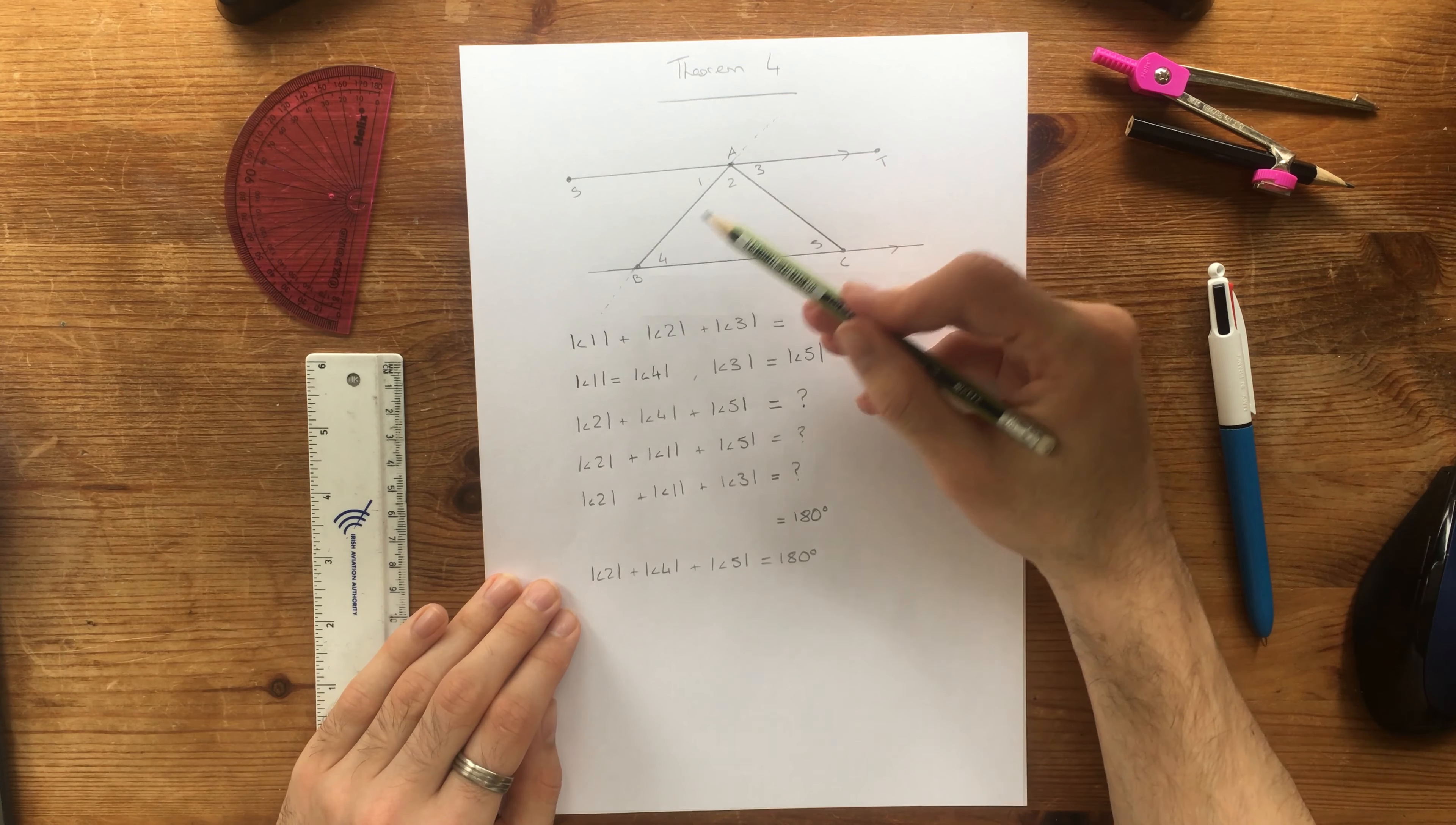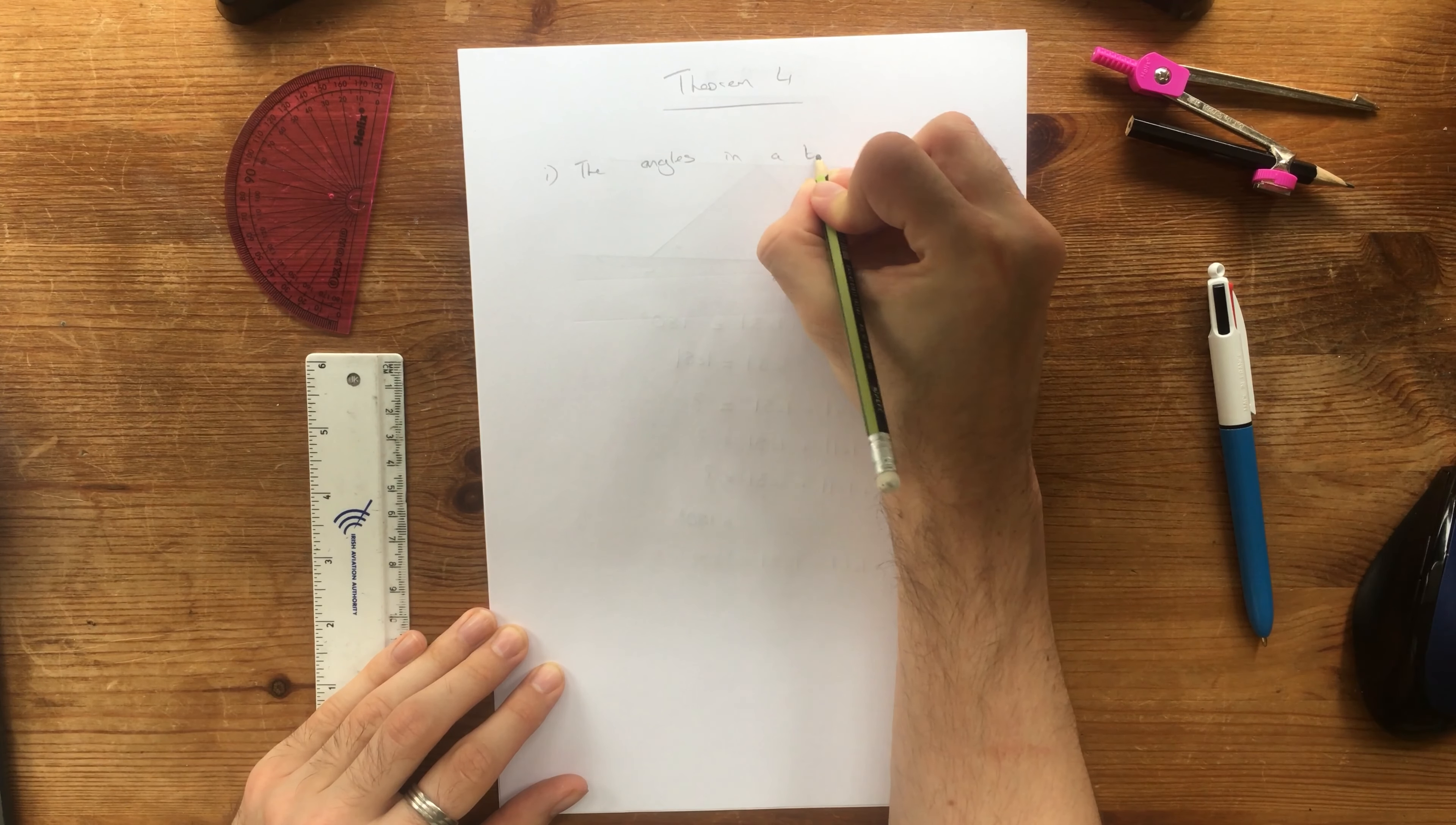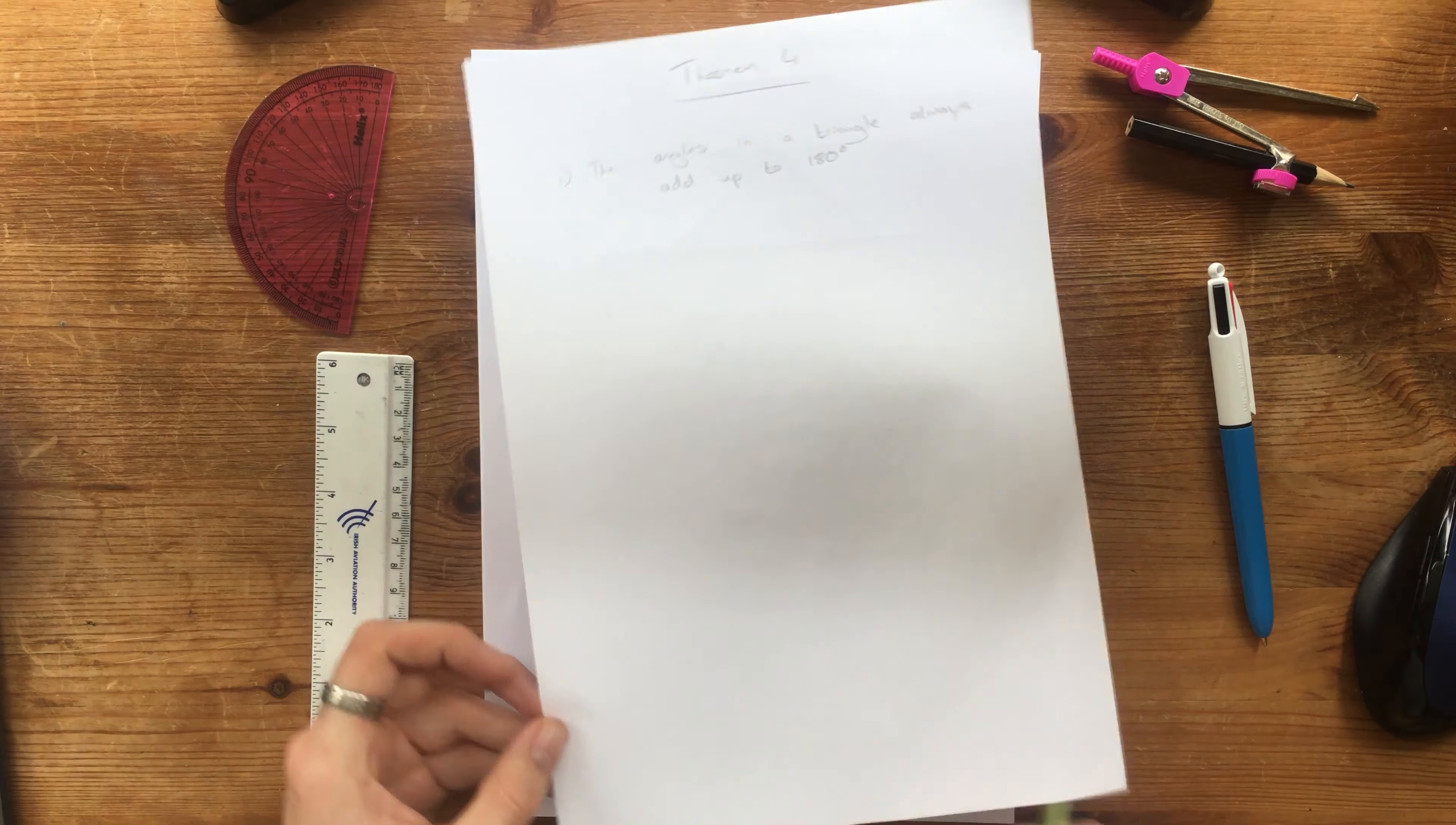Now we look back at our diagram. We know that this angle plus this angle plus this angle is equal to 180 degrees. What do you notice about this shape? It's a triangle. So we've just shown what theorem 4 is. And what theorem 4 says is that the angles in a triangle will always add up to 180 degrees. So we've just shown that by going through this diagram. But we now know that no matter what we have, we'll always have three angles which will add up to 180 degrees.